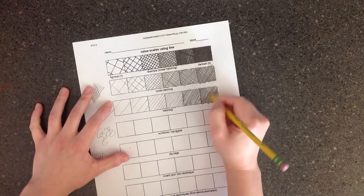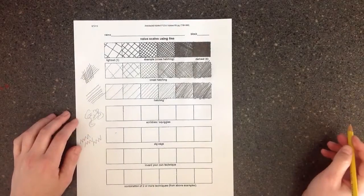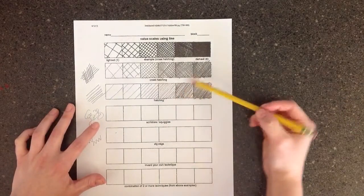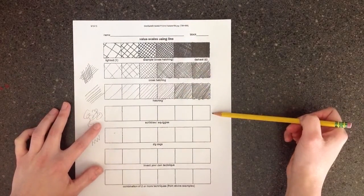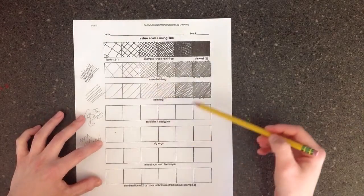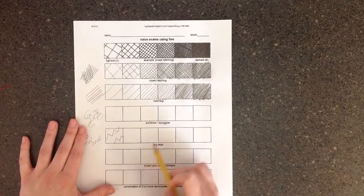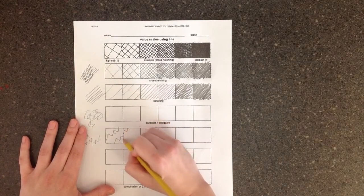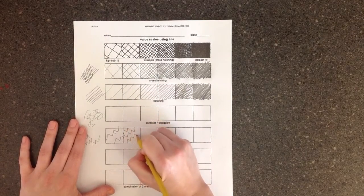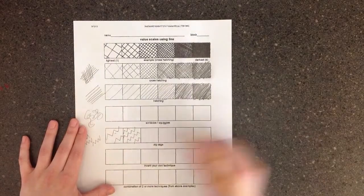And I've gone over this several times to make it darker. Still using the same line, same direction. Like that. The same idea for the scribbles and zigzags. You'll do zigzags, and the closer together they get, the darker it'll be.